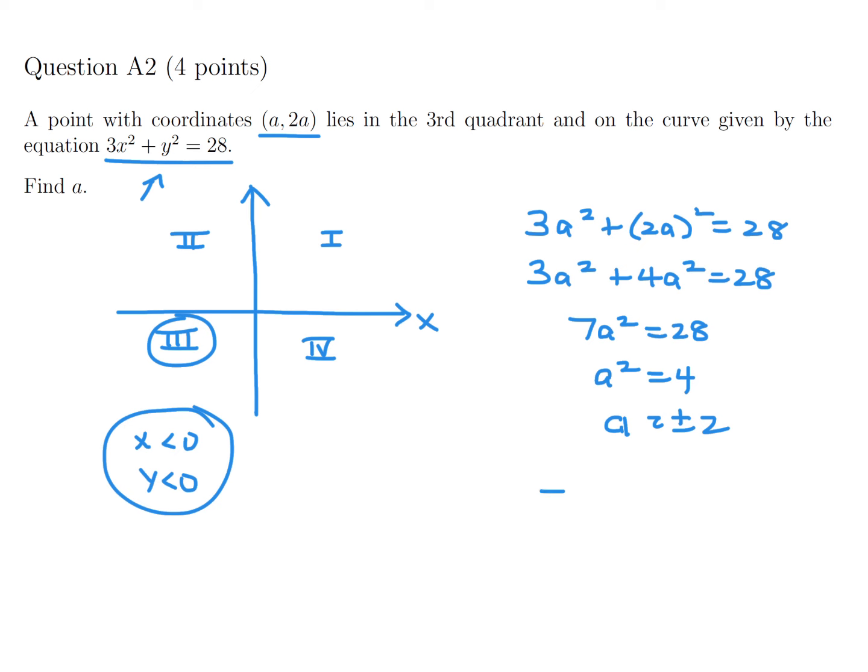So that means that would be minus 2, minus 4 for that coordinate, and that's when A is negative 2, and I think that's all they wanted. They just wanted the value for A.